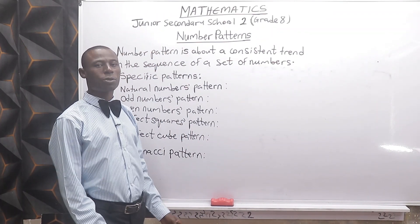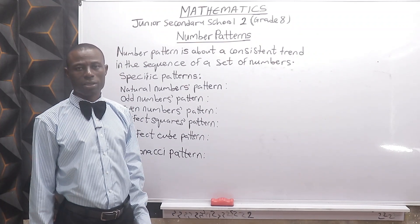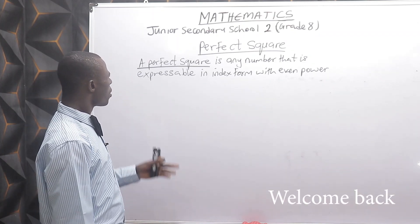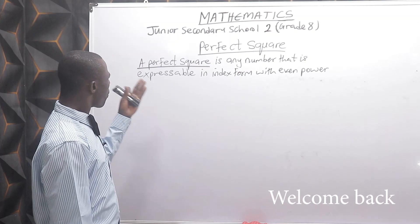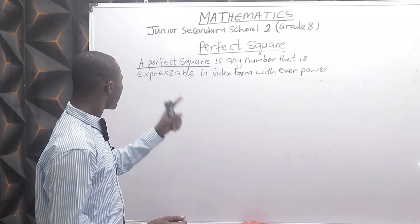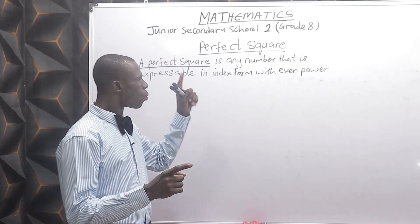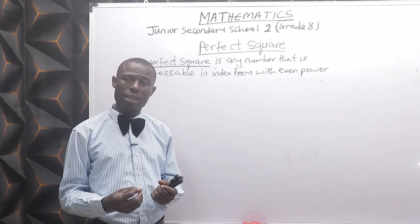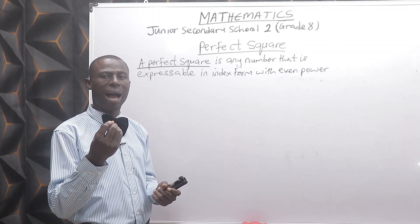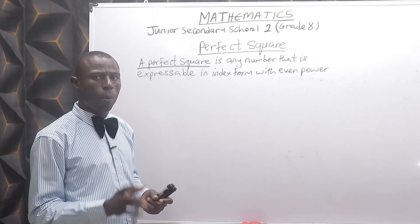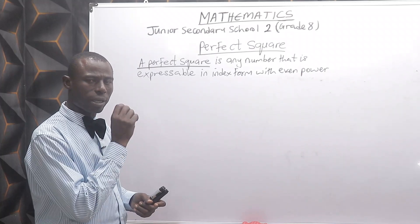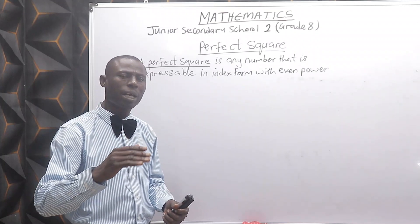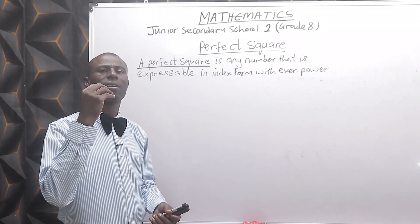Good day everyone and welcome back to ID Mathematics class. Let's consider another concept: perfect square. A perfect square is any number that is expressible in index form with even power. Also, a perfect square gives a whole number square root. Take note of the first definition: a perfect square is any number that is expressible in index form with even power.